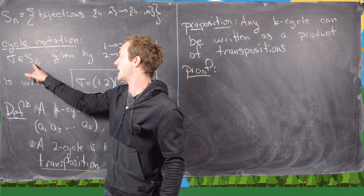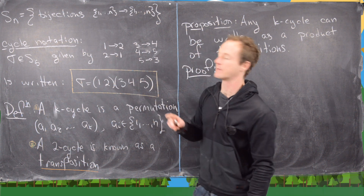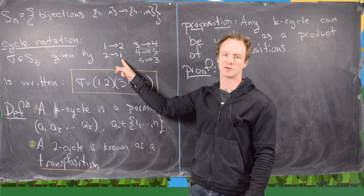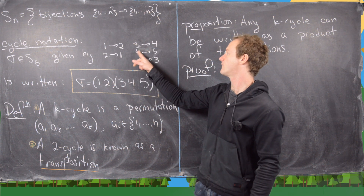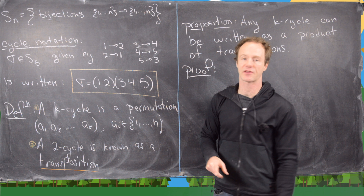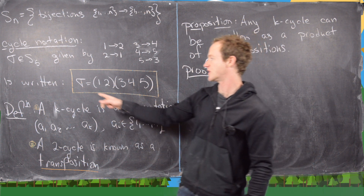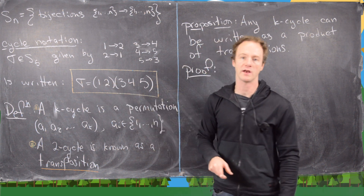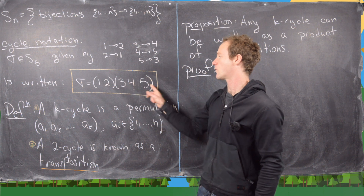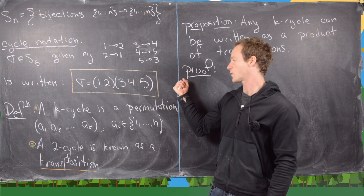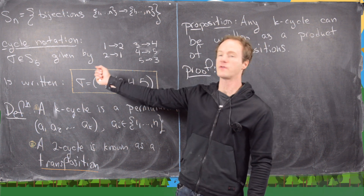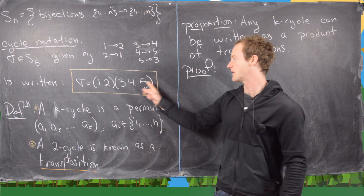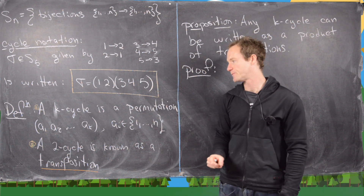If we have sigma in S5 given by the following permutation of 1, 2, 3, 4, and 5 — where 1 is sent to 2, 2 is sent to 1, 3 is sent to 4, 4 to 5, and 5 back to 3 — then we can write that in cycle notation as sigma equals the 2-cycle (1 2) and the 3-cycle (3 4 5). We read that as a function: passing a number from the right through this function sends it to whatever's next in the given cycle, given that these loop back on themselves.